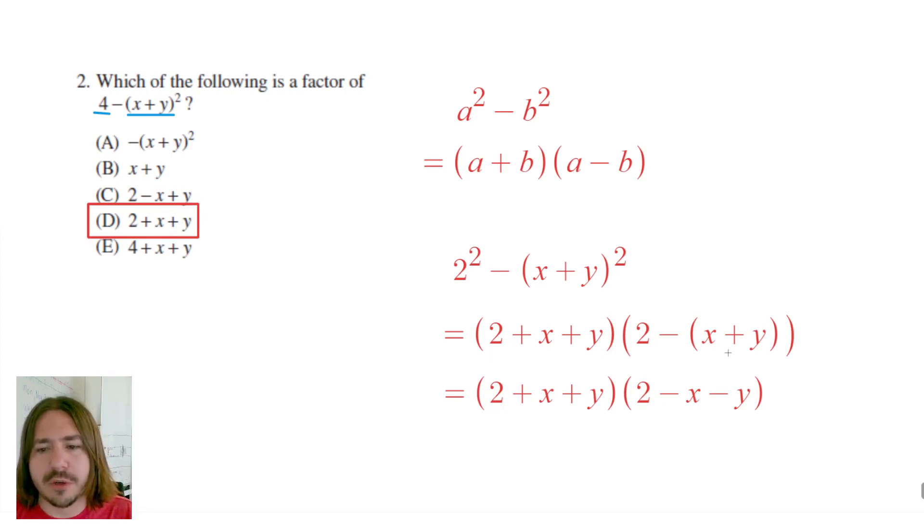So really the key here is to make sure that you distribute that negative sign and write your factors like this so you can see that c would not be correct.